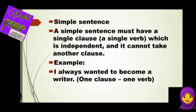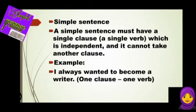What is a simple sentence? A simple sentence must have a single clause or a single verb which is independent, and it cannot take another clause. What is an independent clause? A clause that makes sense by itself and can stand on its own. A dependent clause, on the other hand, does not make sense and cannot stand on its own. I will tell you more about clauses in another video.